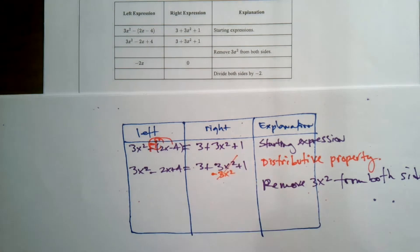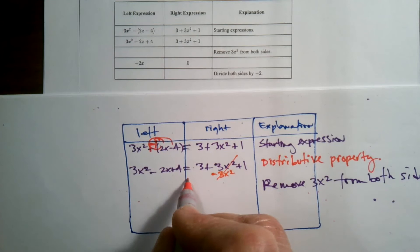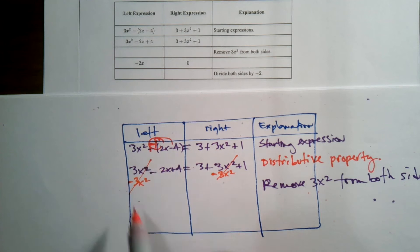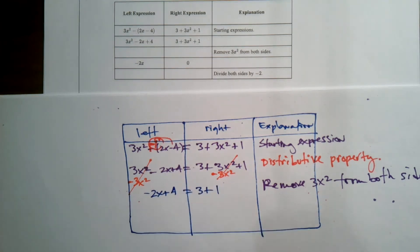So what happens is if I subtract 3x² from this side, it cancels. And what I do to one side of the equation, remember the equation needs to be balanced. What I do to the other side as well. So what I do to one, I have to do the other. So they actually cancel out. So what would that step look like? What they want us to write right here would be what's left, which is the -2x + 4 equals 3 plus 1, right? So that's removing the 3x² from both sides.